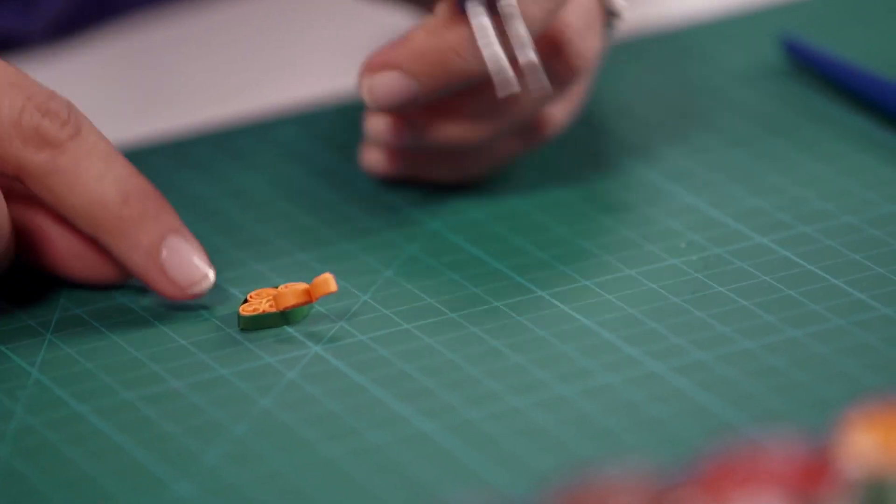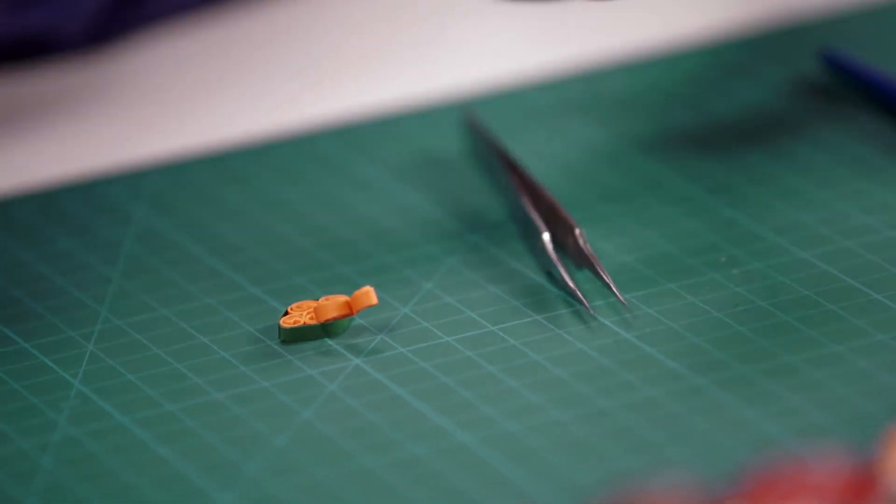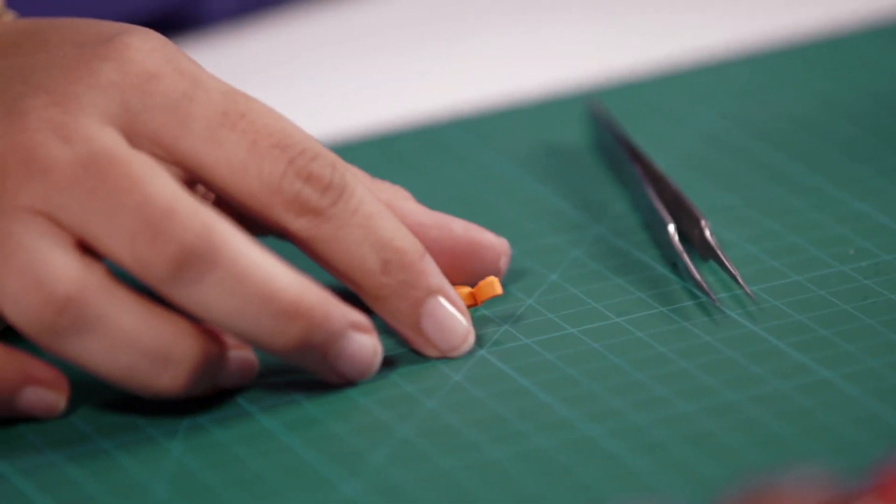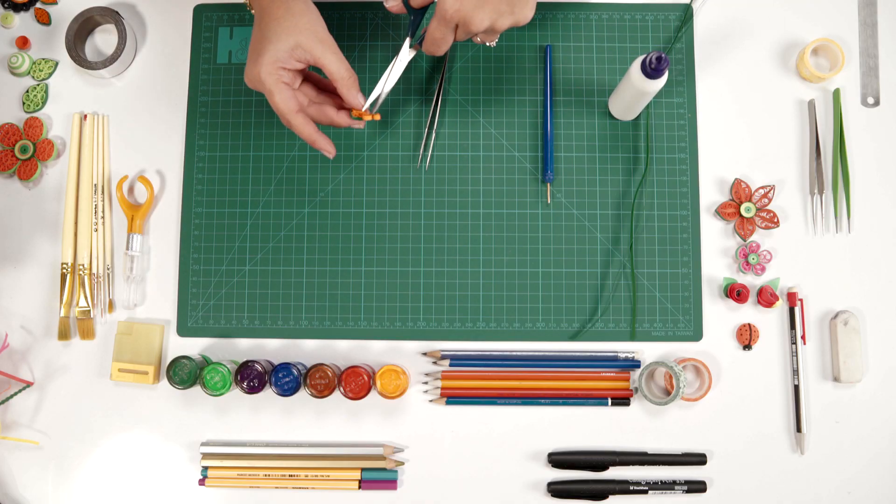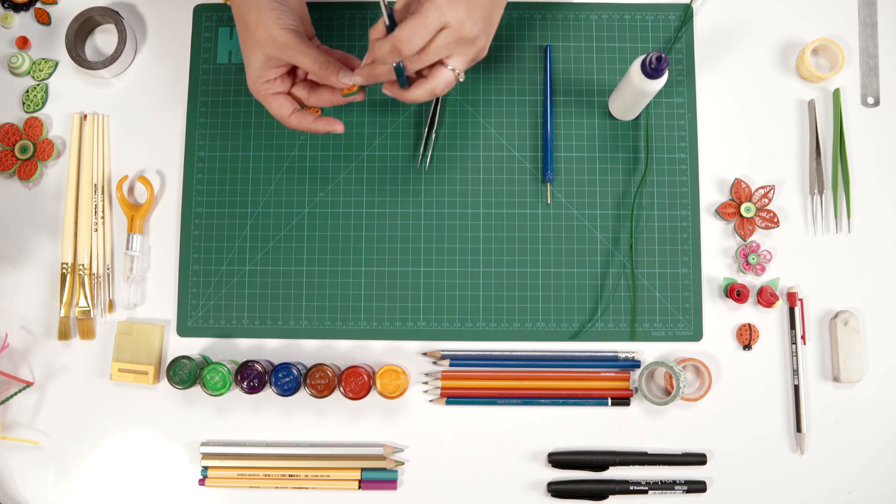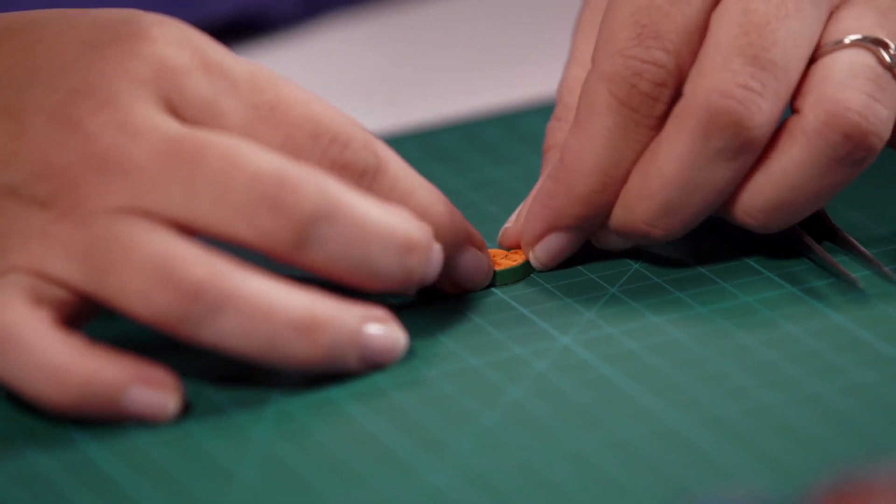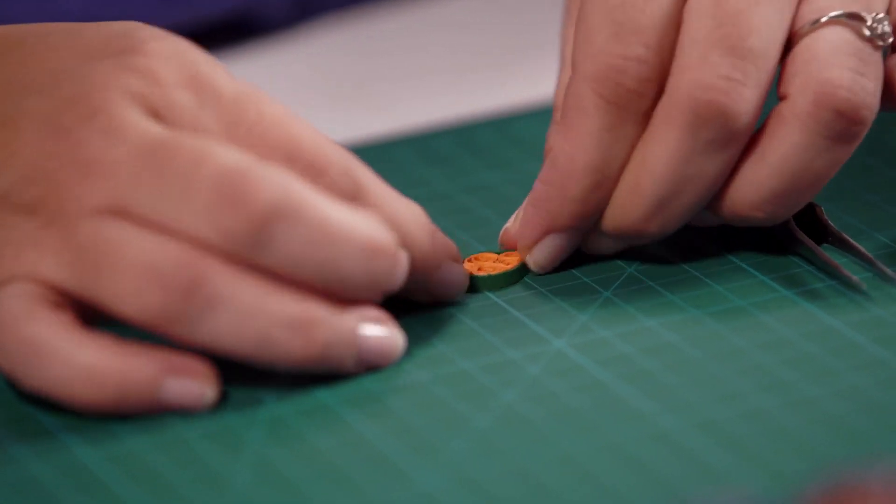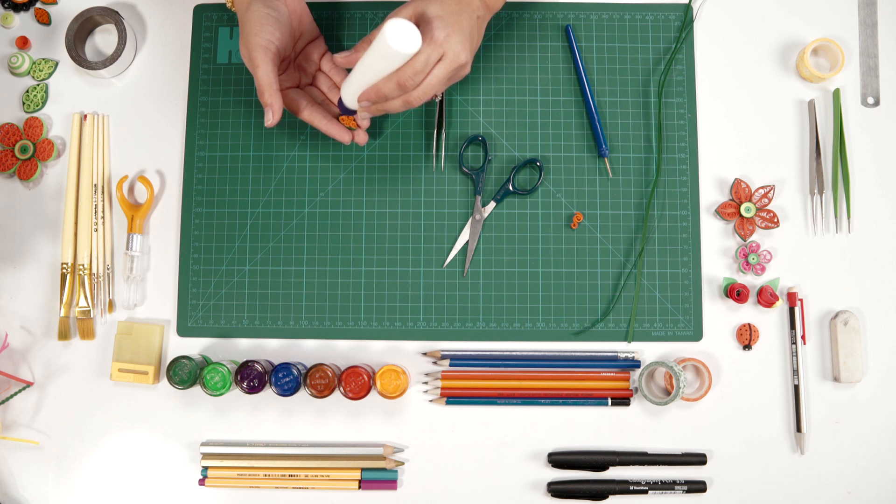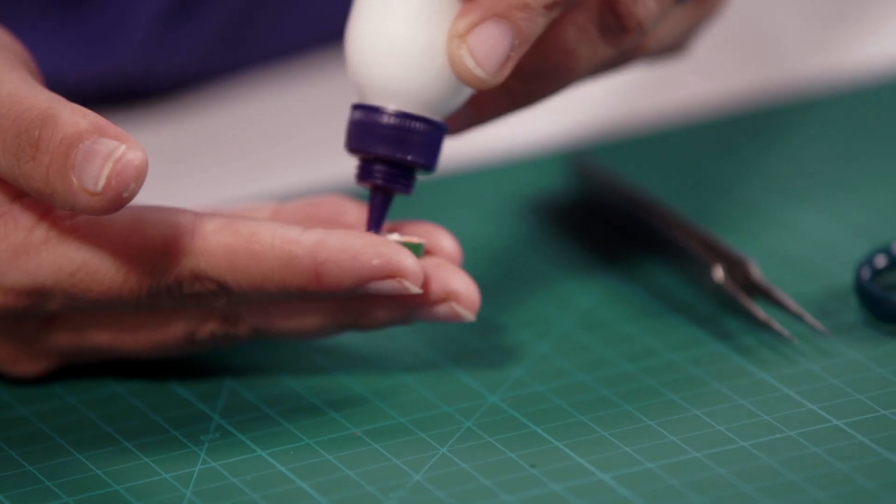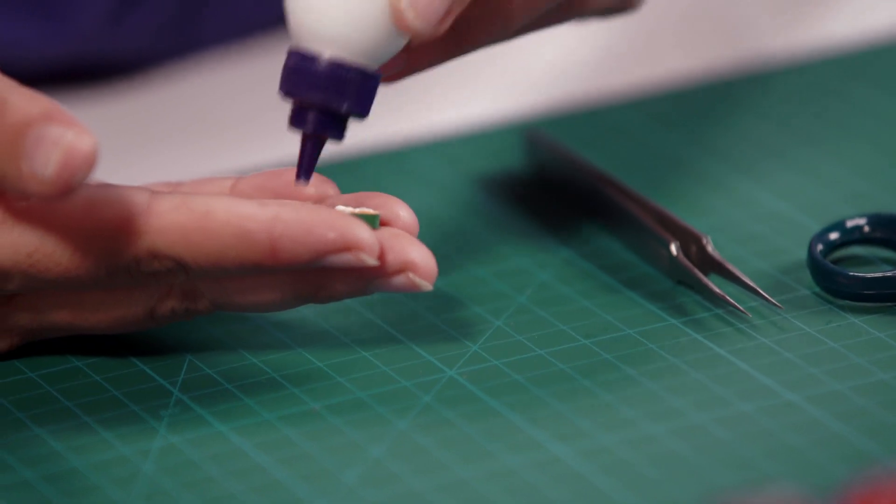Now I guess this much is enough, otherwise it will all get smushed together. Cut off the excess, give this a proper shape and apply glue over it so that it stays in place or it will just come off.